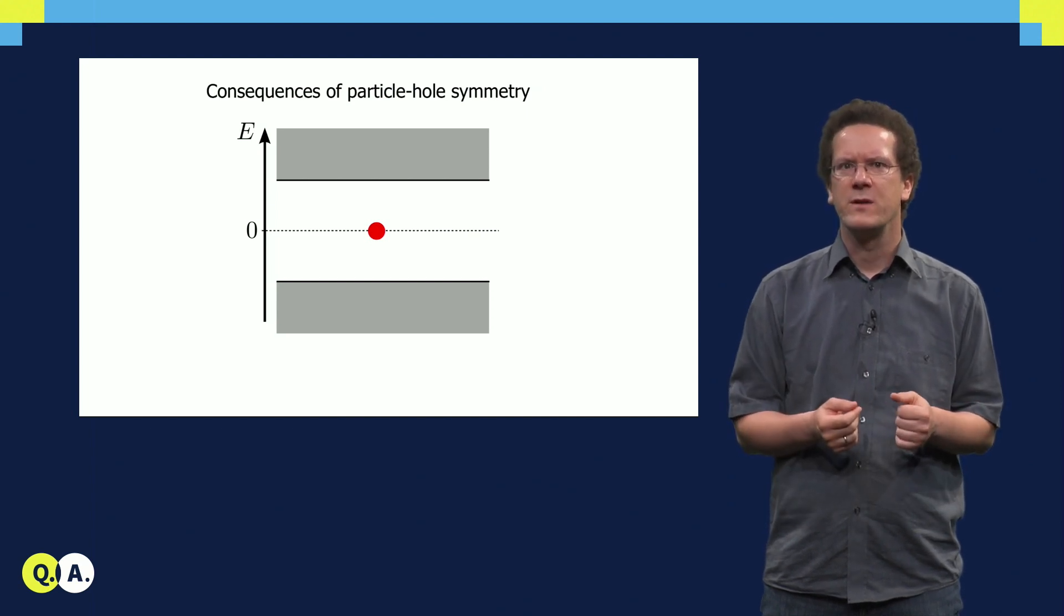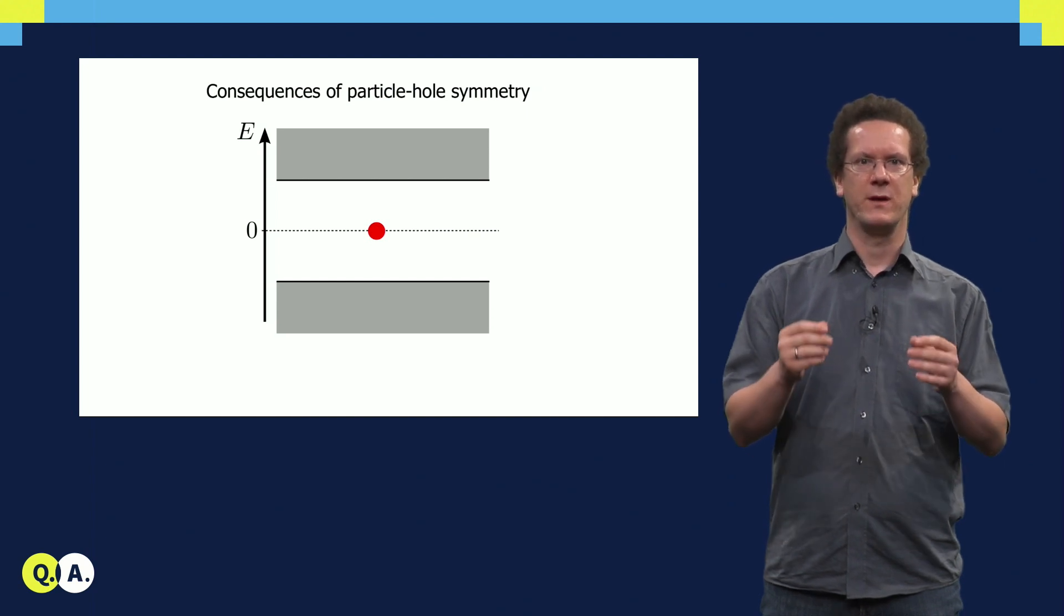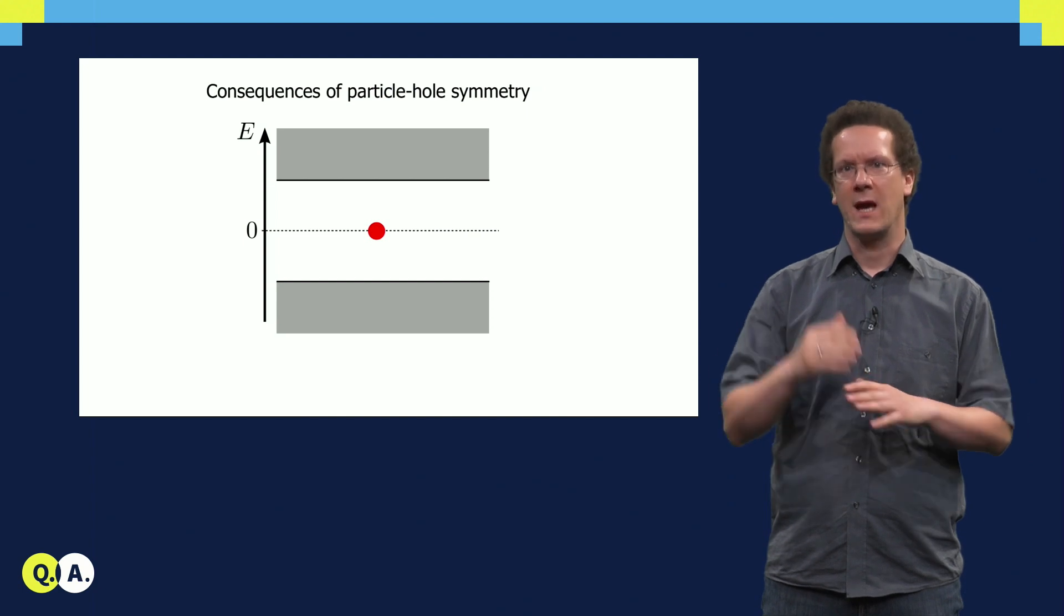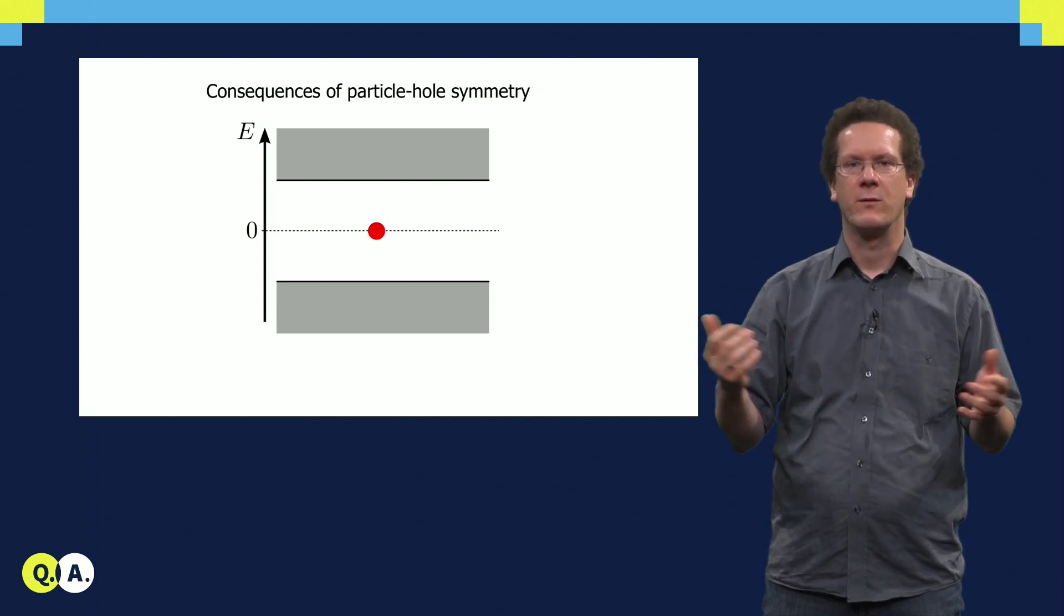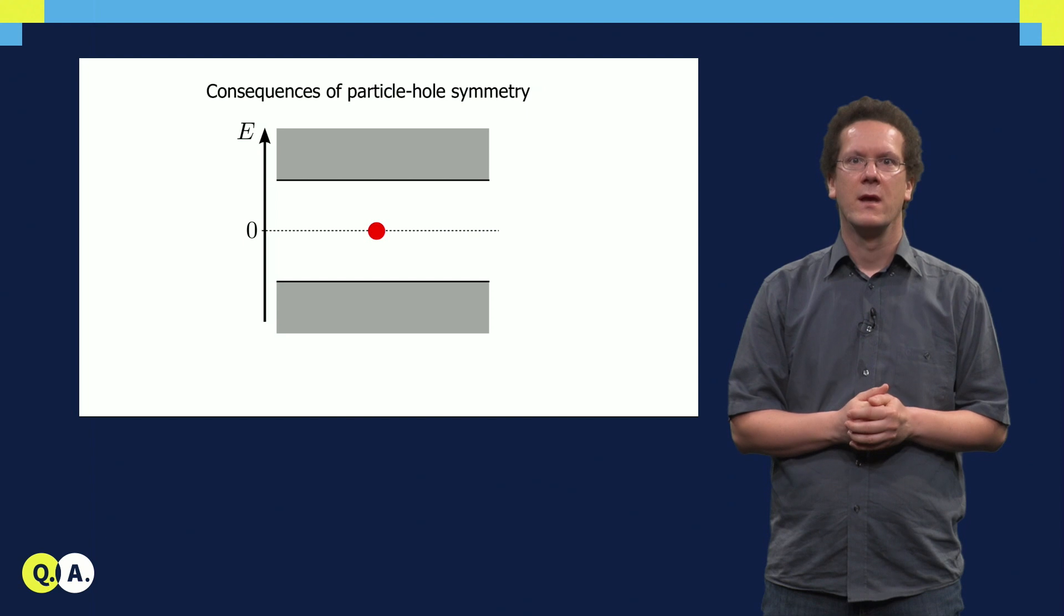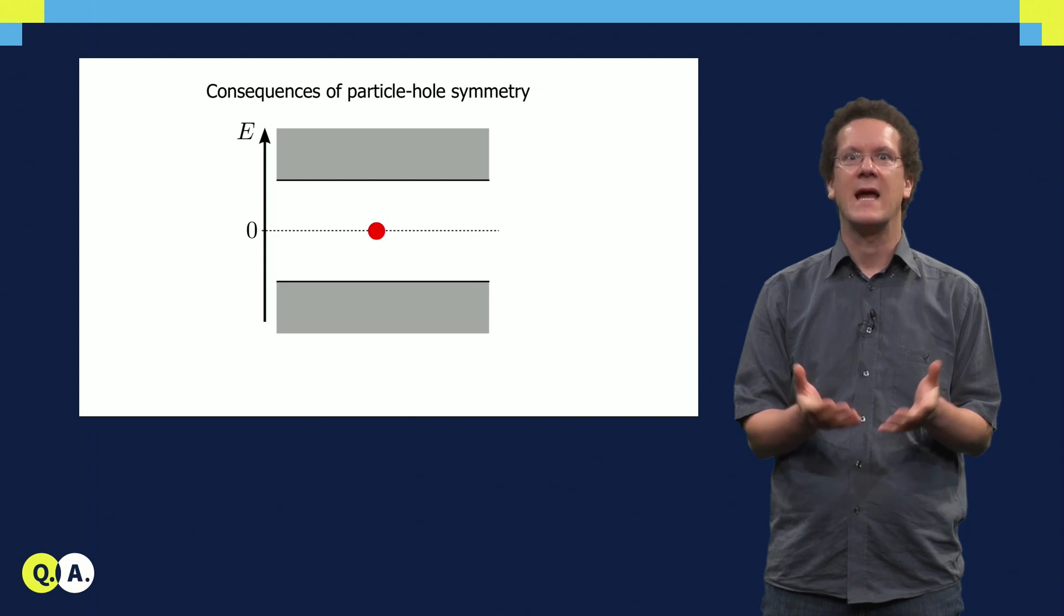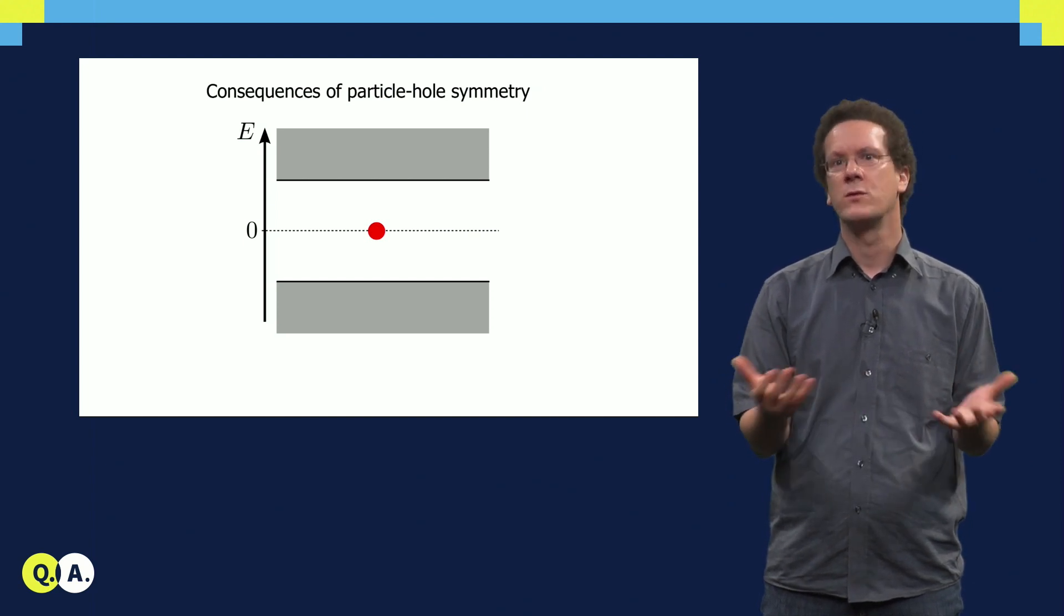Particle-hole symmetry means that the energy spectrum must be symmetric around zero energy. The spectrum has a superconducting gap. This is shown as a white region in the slides. If you have one state at zero energy, one Majorana bound state, then this state is protected and has to remain at zero energy, regardless of what kind of perturbations you do to your system.